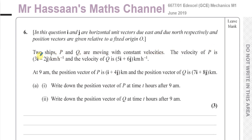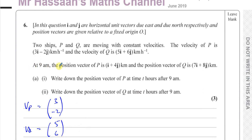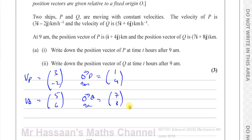Two ships P and Q are moving with constant velocities. The velocity of P is 3i minus 2j kilometres per hour — I like to use column vectors in my working. The velocity of Q is 5i plus 6j kilometres per hour. At 9am, the position vector of P is i plus 4j, so the vector from O to P at 9am is 1, 4. The position vector of Q at 9am is 7i plus 8j, so that's the column vector 7, 8.